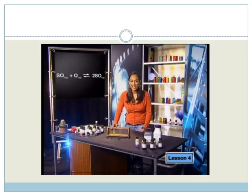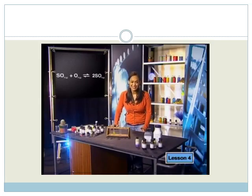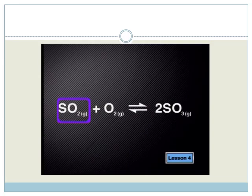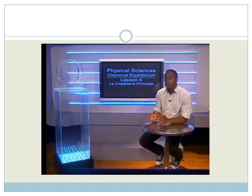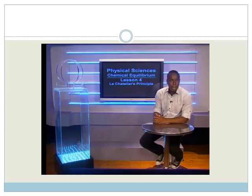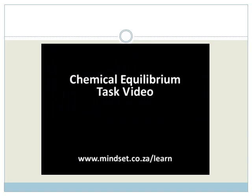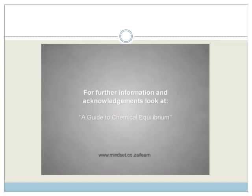Another example is the contact process, which is a series of reactions that produce sulfuric acid. Sulfur dioxide reacts with oxygen to produce sulfur trioxide. Le Chatelier's principle is really important, so it's a good idea to do some of the questions in the rates and chemical equilibrium task video. Also see our website www.mindset.co.za/learn for more details on this series. Take care for now. Thank you for having me.